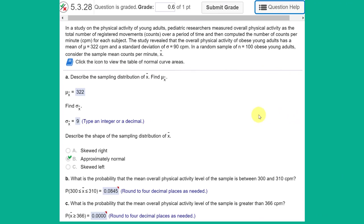Hi, this is Dr. Don. I have a problem out of Chapter 5, Section 3 about the normal distribution. In the problem we're told that we have a sample of 100 obese young adults. We're told that the population of young obese adults has a mean of 322 and the standard deviation of 90.